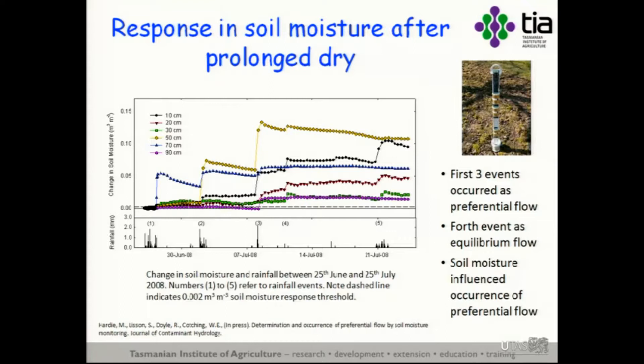The next event showed 20 centimetres responding; 70 is full, 50 still filling. By the time we get to the fifth rainfall event, we actually see things in the right order — 10 centimetres responded, then 20, then 30 centimetres. We finally have the uniform type of infiltration actually predicted by Richard's equation and Darcy's law.